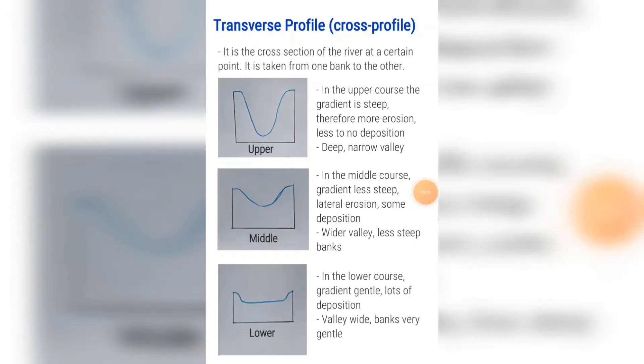A transverse profile or cross profile is basically just a cross section of a river at a certain point. Imagine that you are standing inside the middle of the river and you are looking either downstream or upstream and you take a cross section of what you are seeing both above and below the water. That is a transverse profile.